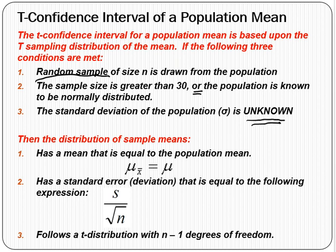With the z-interval, the standard deviation of the population is known. With the t-interval, what we're doing is constructing a confidence interval estimating a population mean when the standard deviation of the population is unknown. This is probably about 95% of what statisticians do, because rarely do you know the standard deviation of the population.